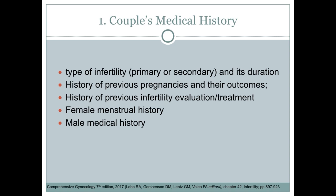For the couple's medical history, we determine the type of infertility, whether it's primary or secondary, and its duration. We also ask about the history of previous pregnancies and their outcomes, obtain history of previous infertility evaluation and treatment, and this should include details about frequency of intercourse and the presence of any sexual dysfunction.